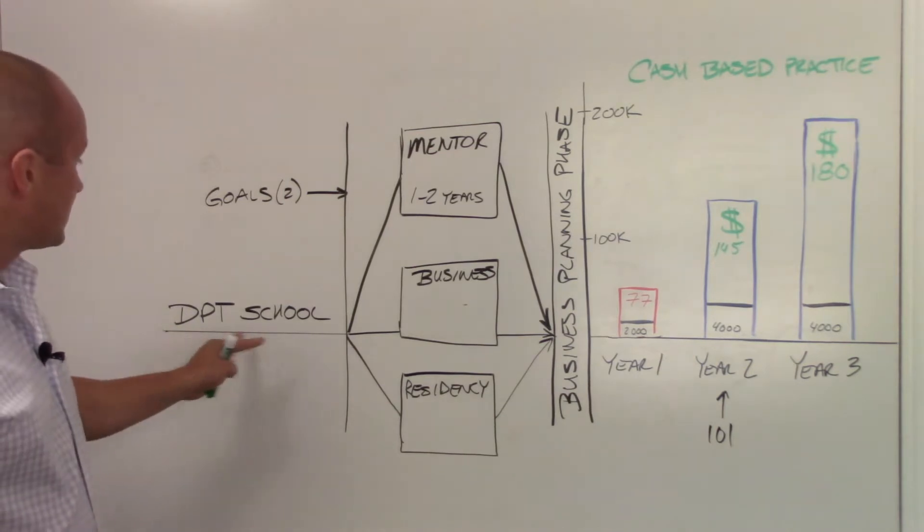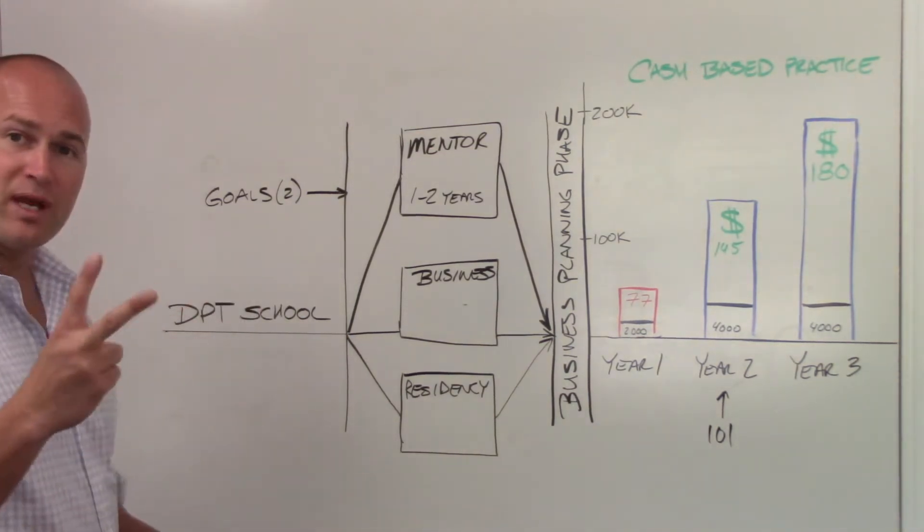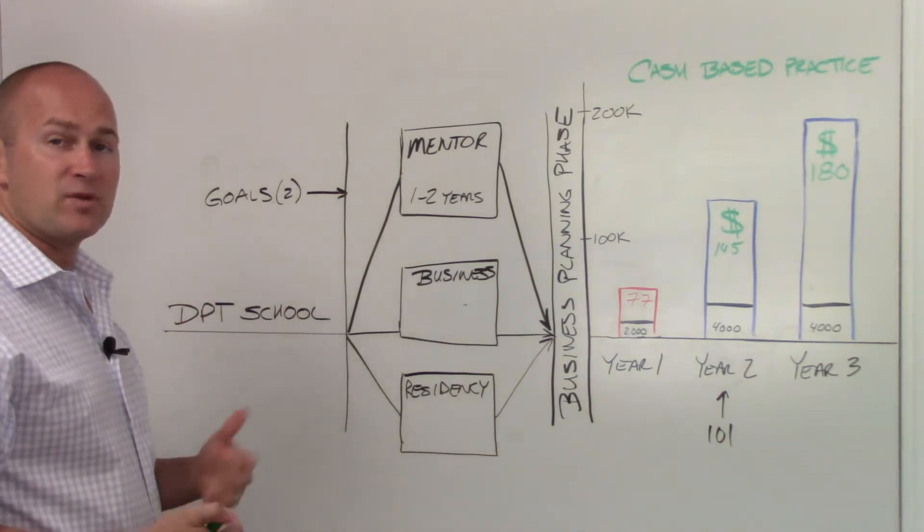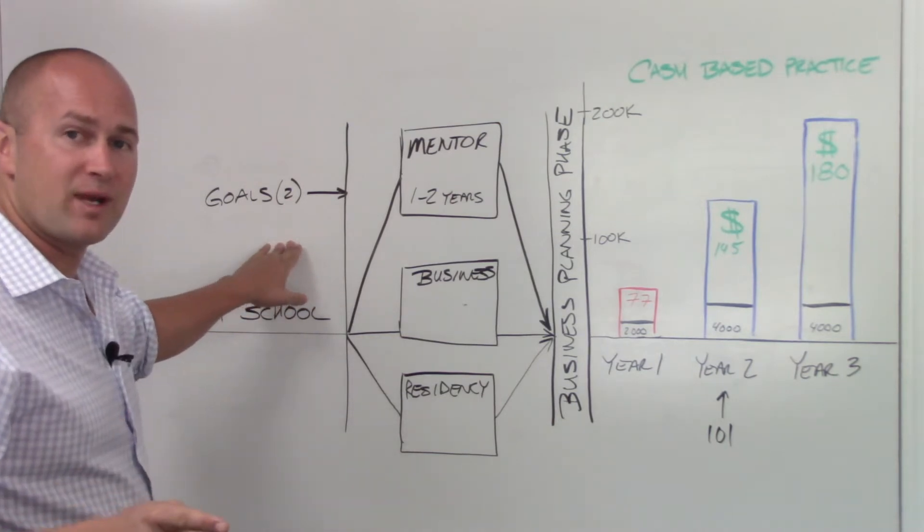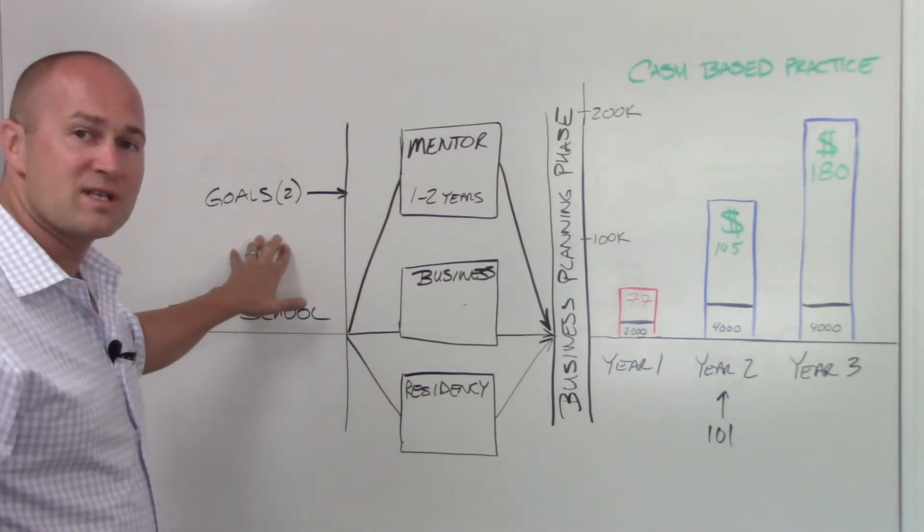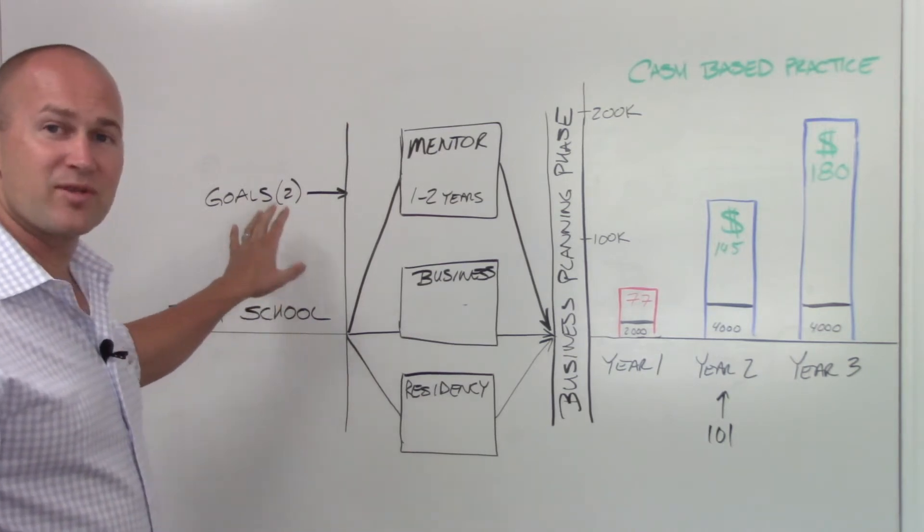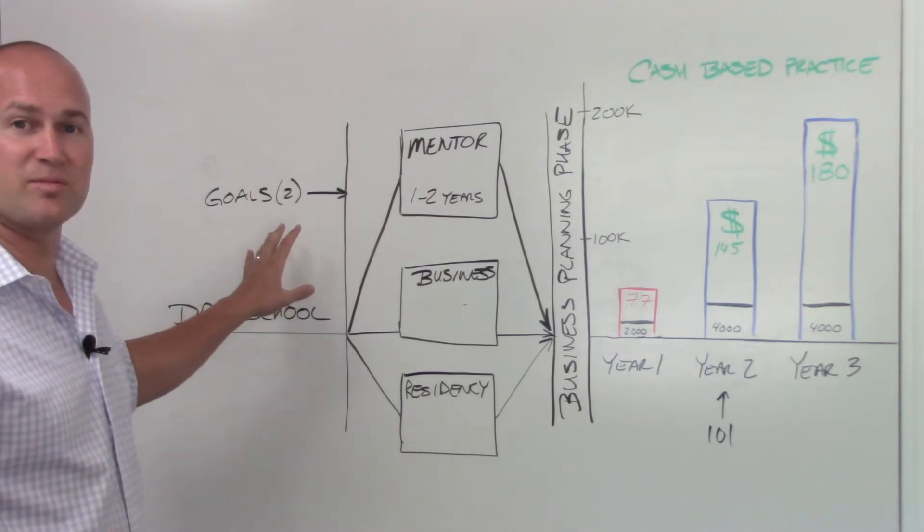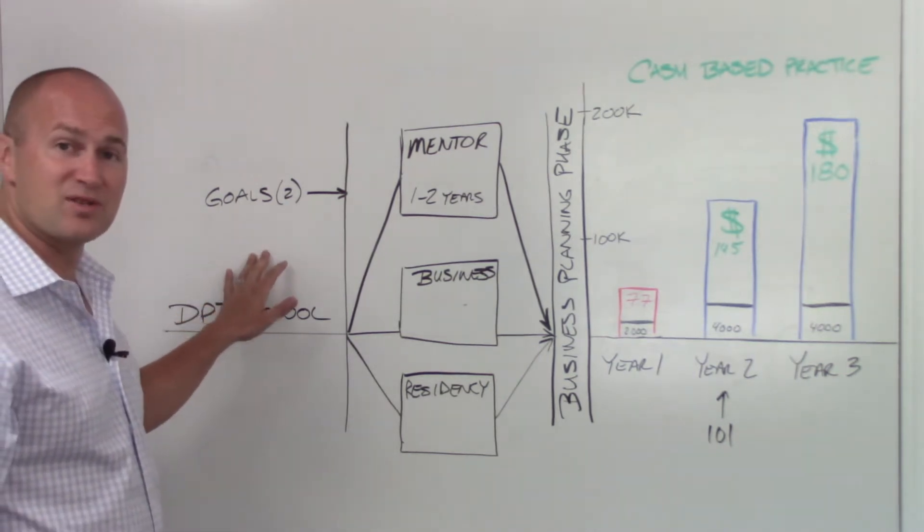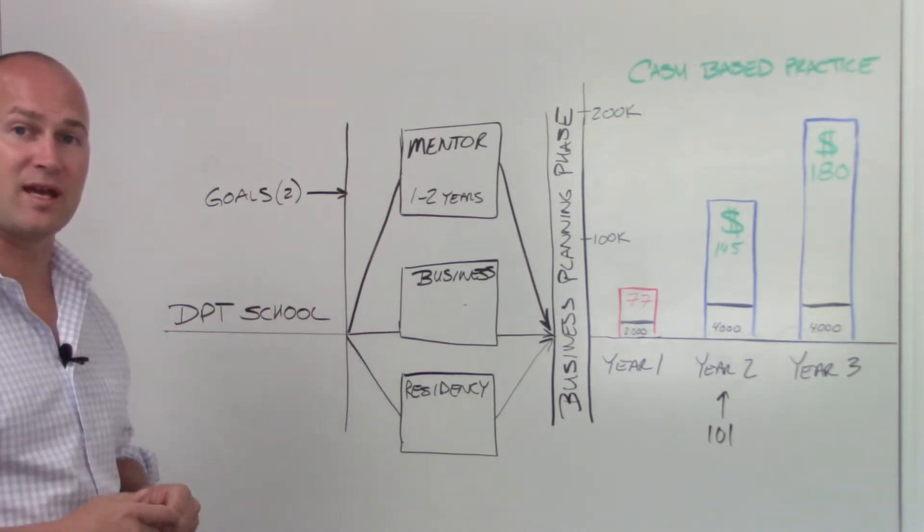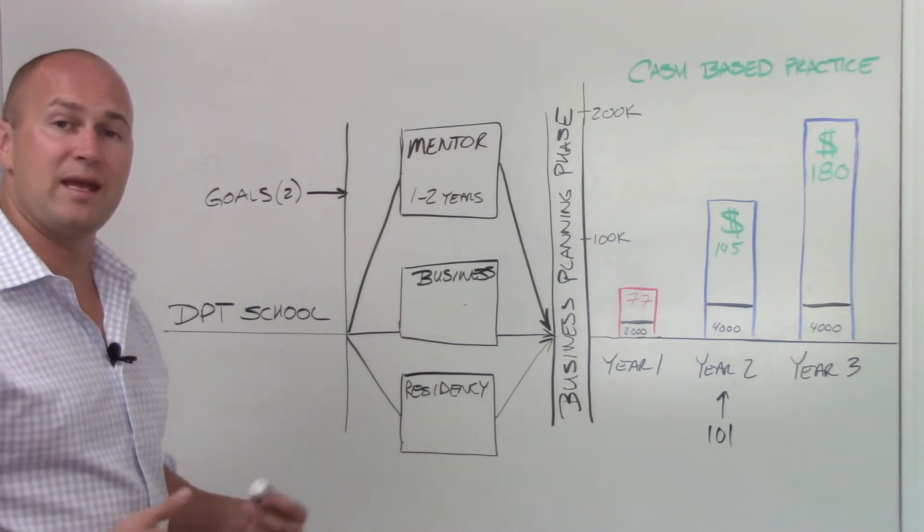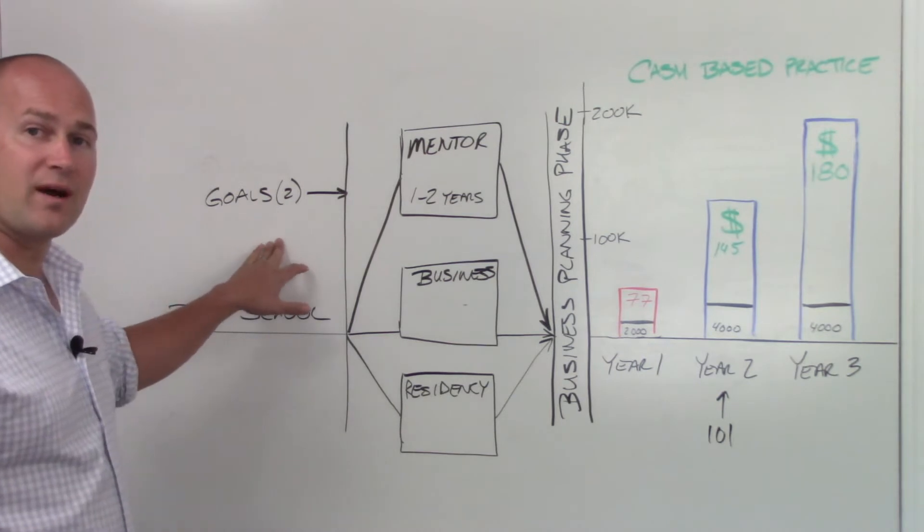When you're starting out in school, this first track here is DPT school. You have two main goals. Your first goal is to graduate and pass your boards, because if you don't pass your boards, none of this means anything. Your goal is not to be the best student, but to be the best physical therapist. Take full advantage of that, whether it's shadowing other clinicians or taking some of the best continuing education courses for a cheaper rate, getting involved in the APTA and your state organization.